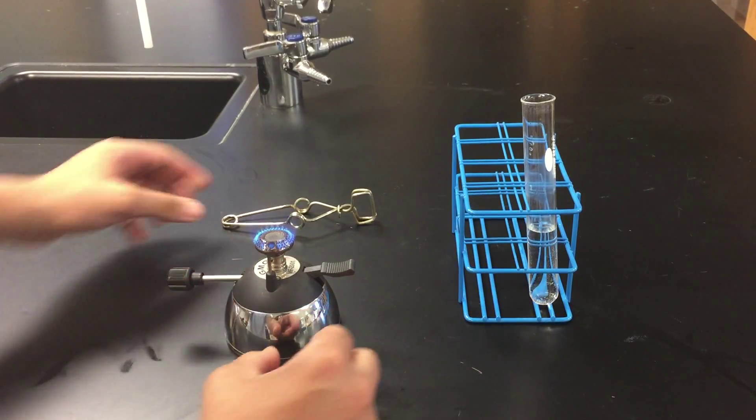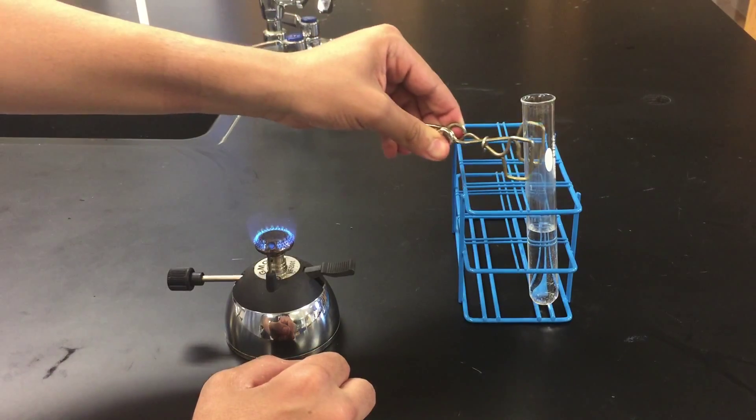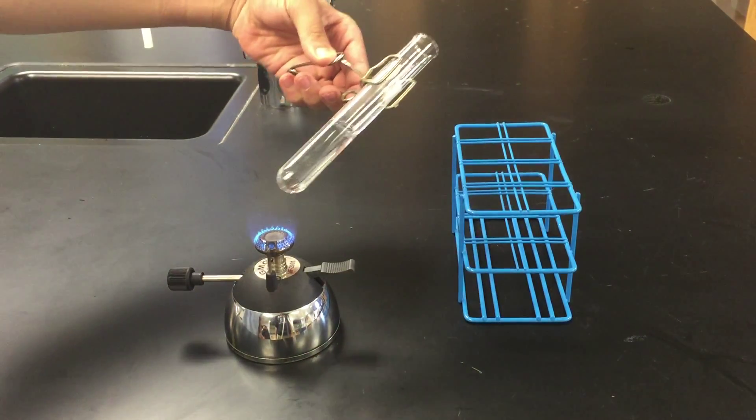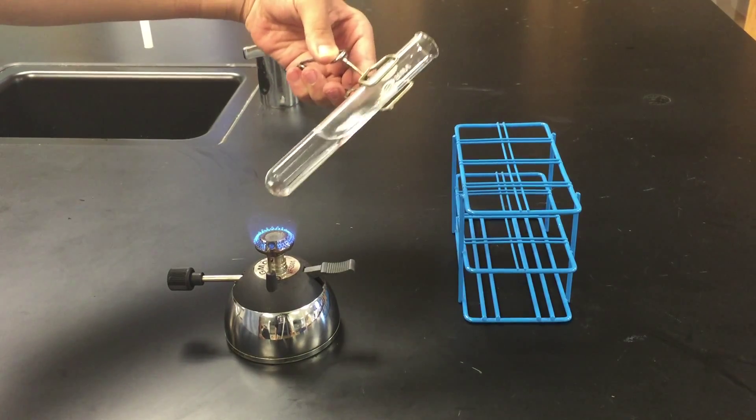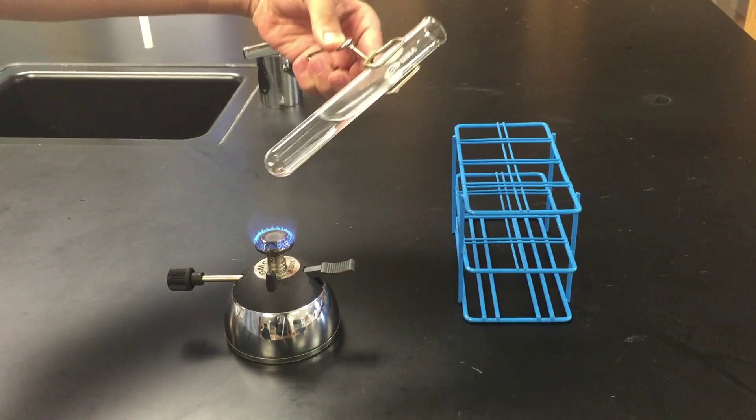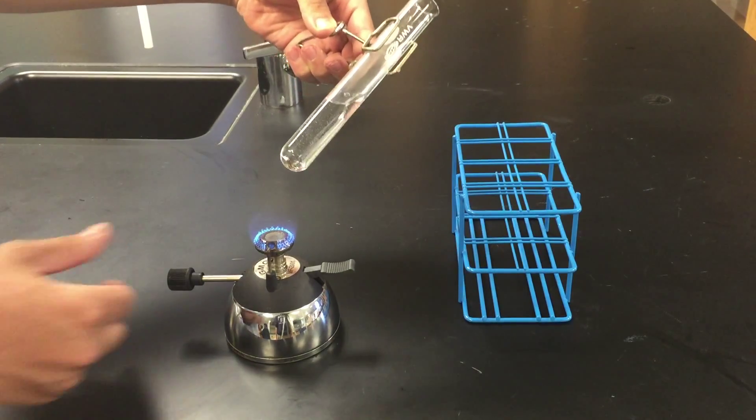Take the test tube with the clamp and hold it above the flame. Make sure to point the test tube away from you so that any vapors don't go towards you. Also, gently shake the test tube to mix the liquid. This prevents part of the liquid from superheating and splattering out.